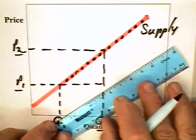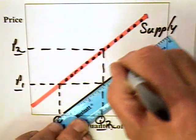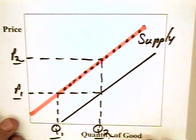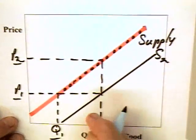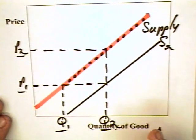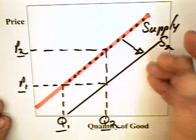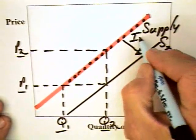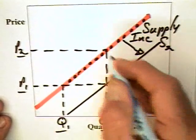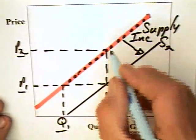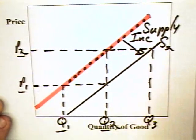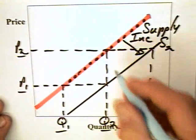Price is not the only consideration affecting the amount that producers are willing to offer. Indeed, a prime consideration is the cost of production. If the cost of production decreases, then you get an increase in supply — because if the cost of production is decreasing, producers should be willing to offer a larger quantity at any given price. They should also be willing to offer any given quantity, say Q2, at a lower price.